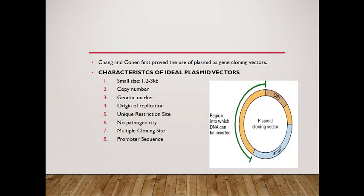In this picture, you are seeing different characteristics of a cloning vector. This is the plasmid. It has an ampicillin resistance gene. It has an origin of replication and multiple cloning sites. Chang and Cohen first showed the use of plasmid-derived gene cloning vectors. The characteristics of plasmid vectors: they are small in size, 1.2 to 3 kilobases. Copy number is mostly high and low. They show genetic markers for selection. They also have origin of replication. They show unique restriction sites for different endonucleases. They do not show pathogenesis. They have multiple cloning sites and they also show promoter sequences.